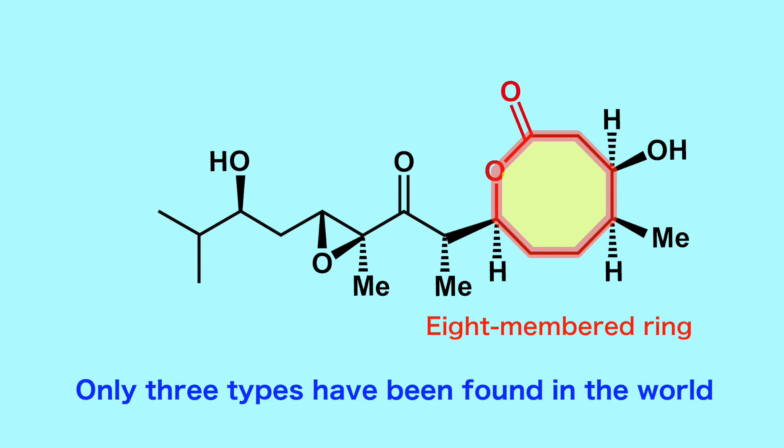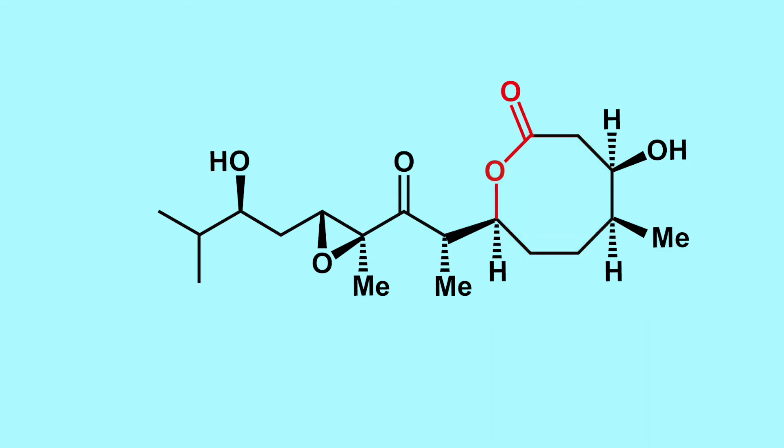Only three types of molecules in the world have been found to have this eight-membered ring, and there has been no simple way to synthesize them. MNBA is used to artificially synthesize this structure.